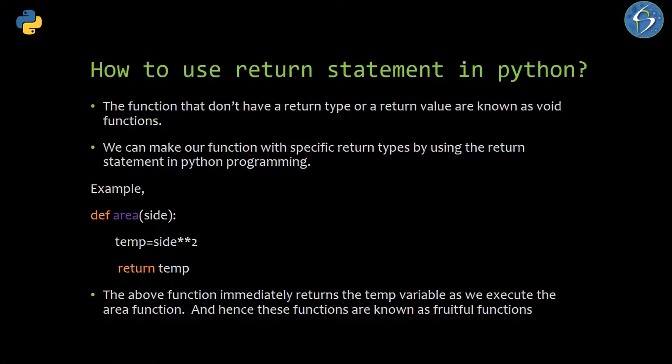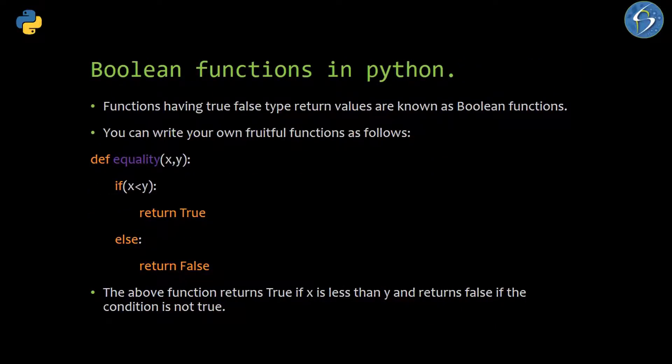The above function immediately returns the temp variable when we execute the area function, and hence these functions are known as fruitful functions. Here the 'fruit' means the kind of value we want from our functions. The next part is boolean functions — functions which have a return type of boolean, meaning true or false.